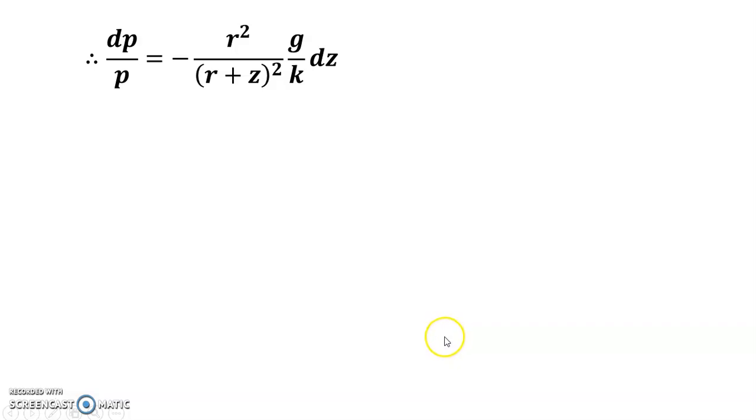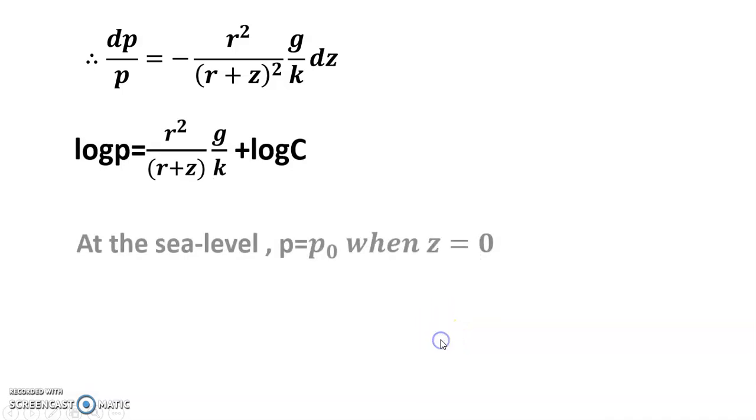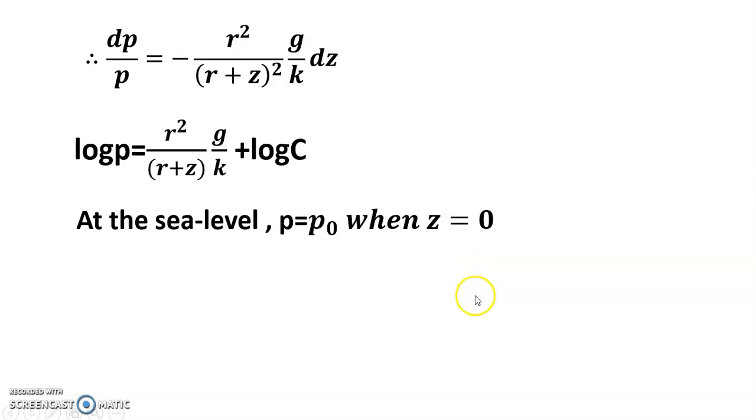At sea level, I get log(p/p₀) = -grz/(k(r+z)). So p = p₀e^(grz/(k(r+z))). Friends, you can get the same values from ρ = ρ₀e^(-grz/(k(r+z))). It is g/k × rz/(r+z). Thanks for watching, I hope it is clear for everyone.